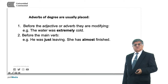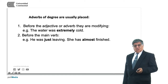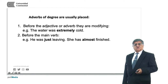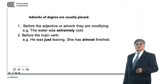In the second example, she has almost finished. Finished is the past participle form of the verb finish, and has is the auxiliary. It has almost finished — and as you can see in both cases, just and almost come before the main verb.